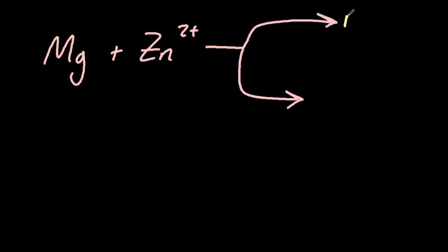Now, magnesium and zinc 2 plus ions, there are two things that could happen. The first thing is nothing could happen. It just makes magnesium and zinc 2 plus, no reaction.